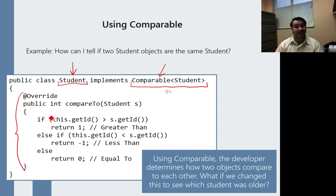And so I have to decide how I get the negative one, zero, or one. In this case, I say, if my student, if this guy, this.getID is larger than this guy's ID.